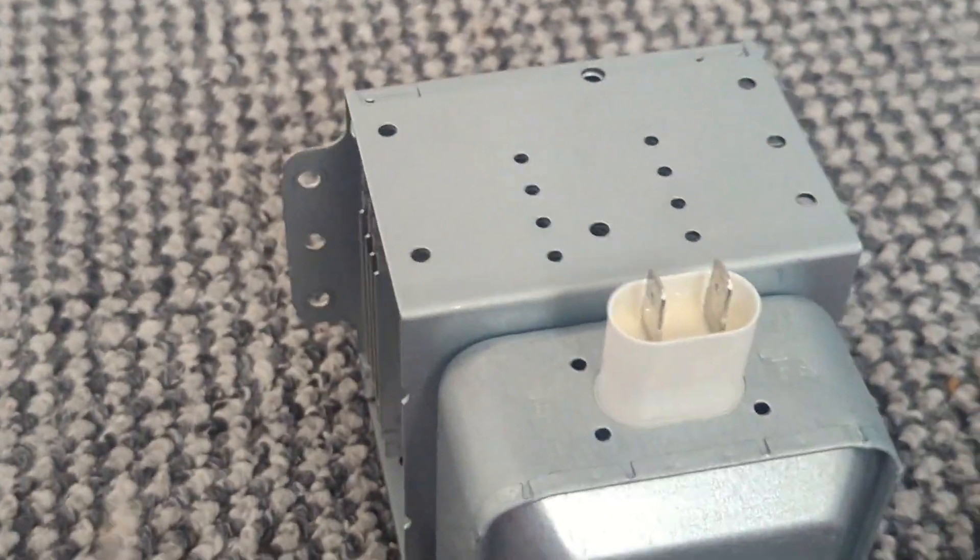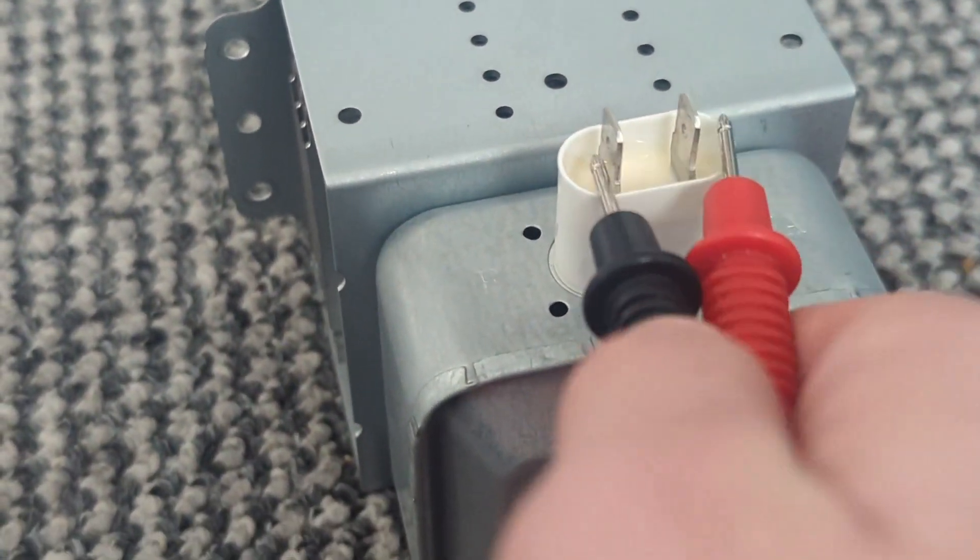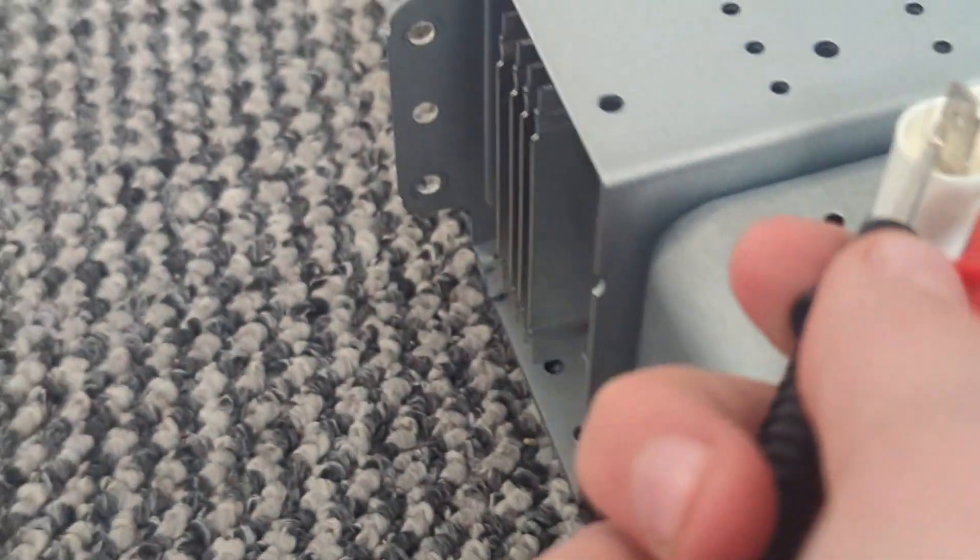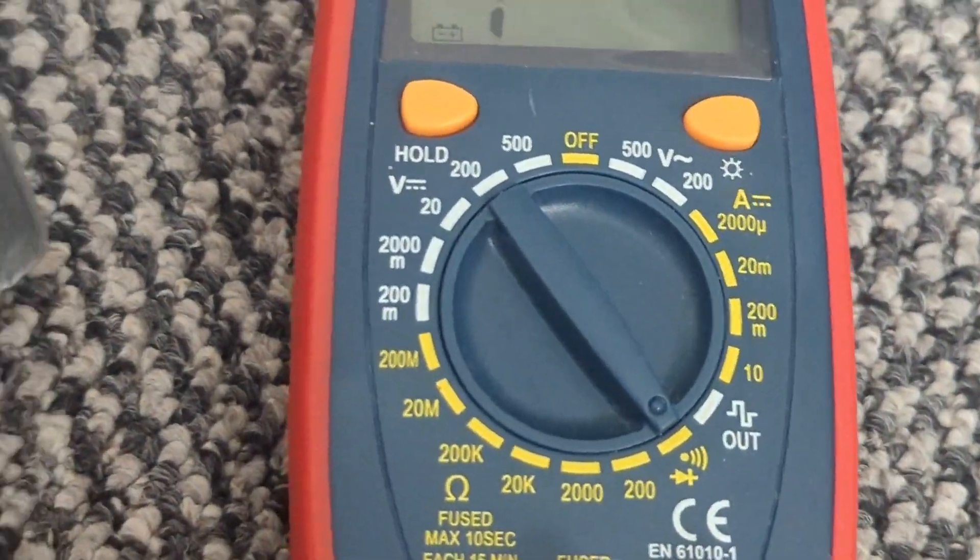So basically, grab your magnetron and touch these with the continuity setting. If it beeps, then it's okay and the insulation is okay.